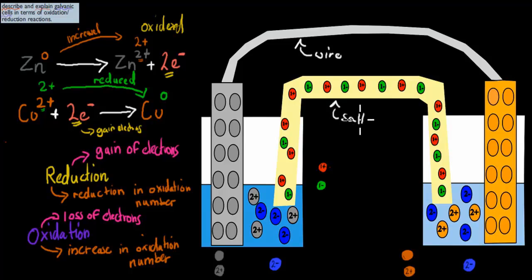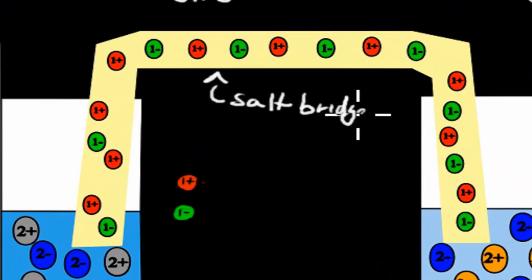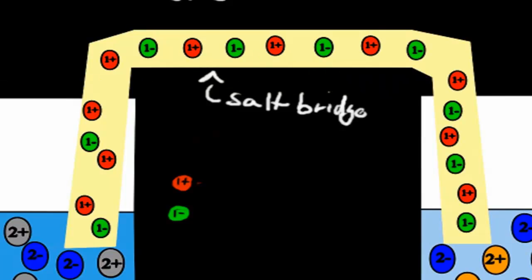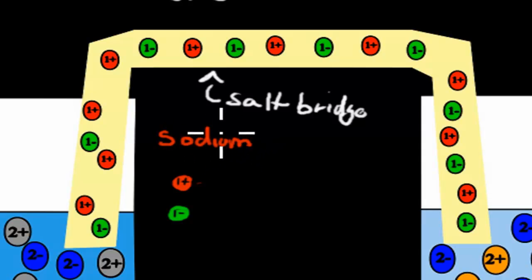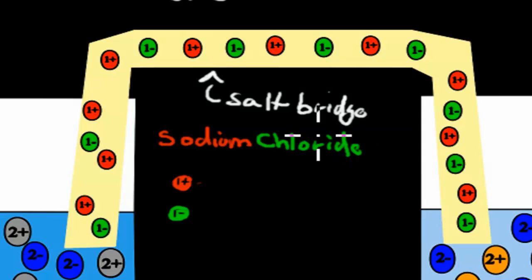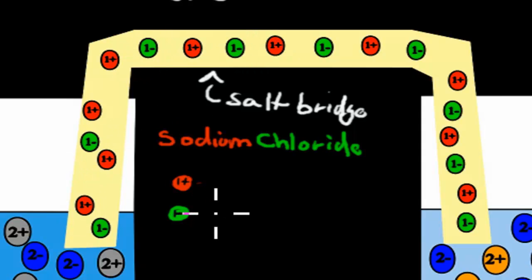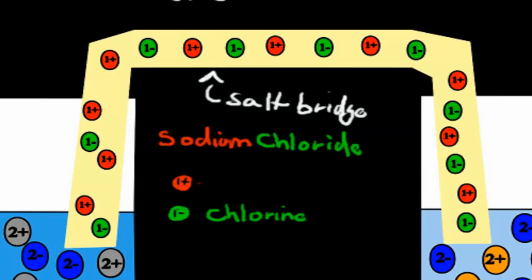In the salt bridge, we have salt. There can be different types of salt — in this case I've chosen sodium chloride, the most famous salt, to keep it simple. Salt is just two different ions attached together. The green 1-minus particles you can see are the chlorine ions, and the red 1-plus particles are the sodium ions.